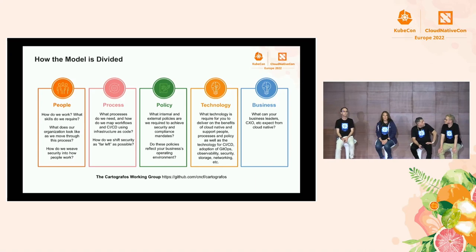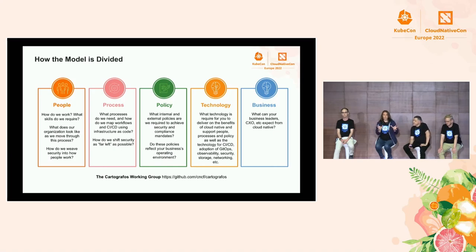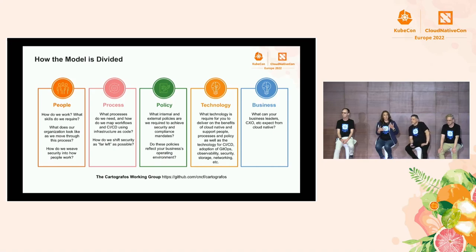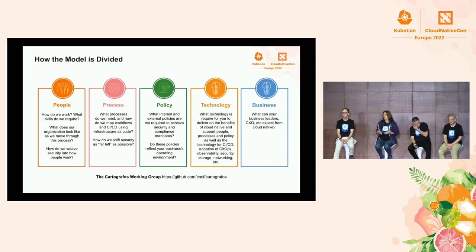Within each of the five levels of the maturity model, as we were pulling it together, we realized there were key themes coming out — journeys that people had to go on. What skills do they need? How do they need to establish their team and their framework? We saw a theme around policy: what do you need to put in place for compliance, what security regulations do you need to meet? There was process — how are we going to organize our workflows, what are we going to do with CI/CD? And then there were business outcomes: why are you actually doing this, and at each stage what should you be able to demonstrate to your business leaders, to your board, to your C-level? So within each of the five levels, we go through these five different areas.